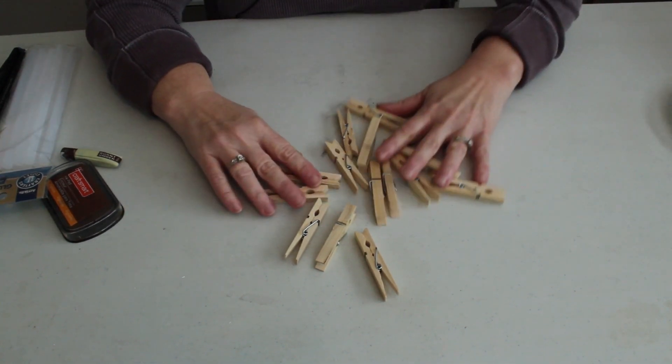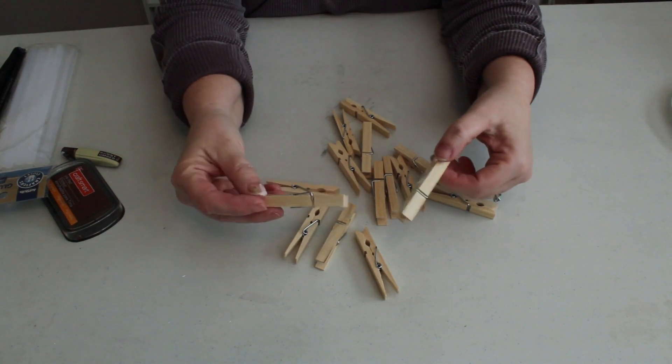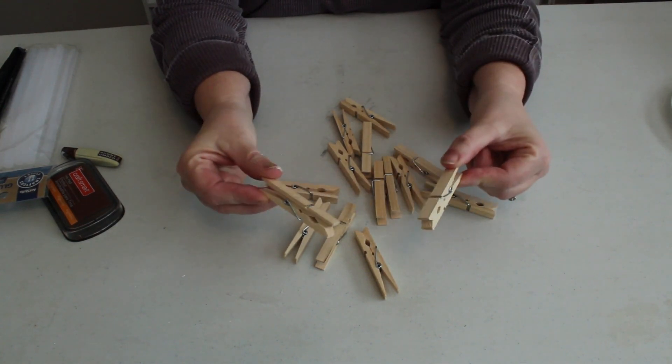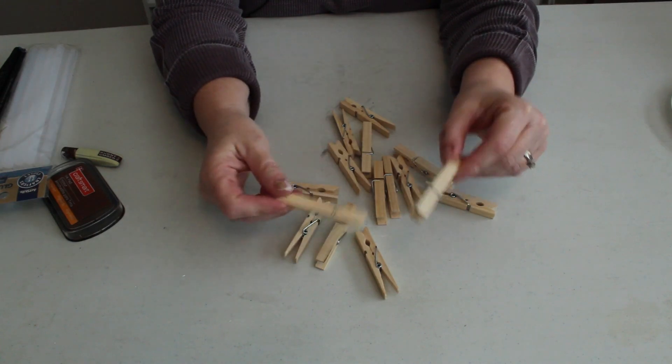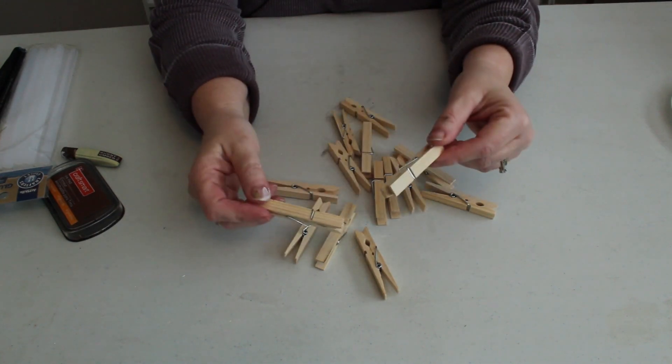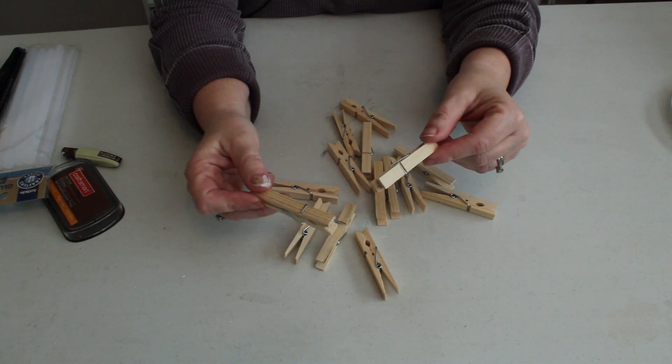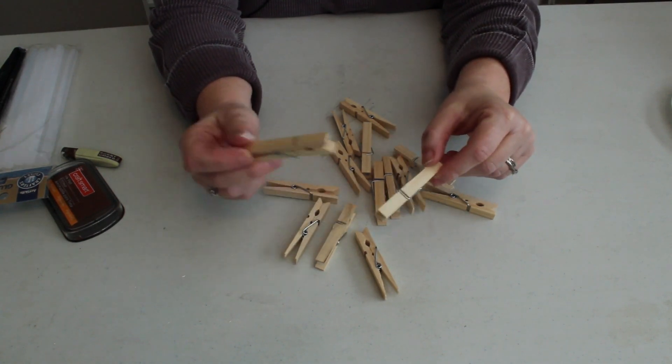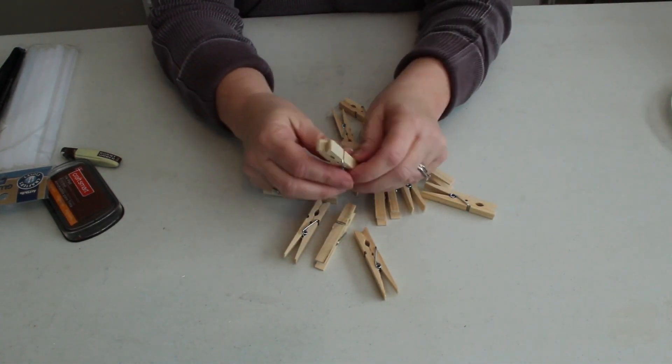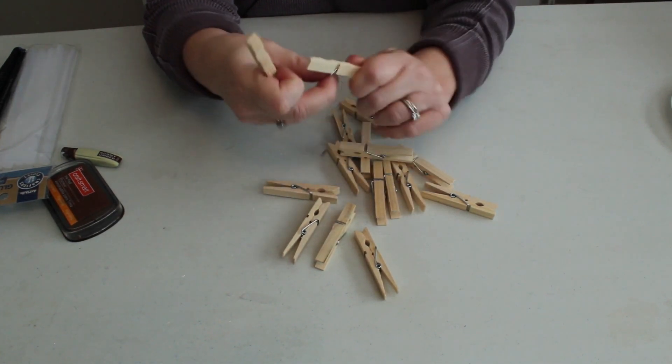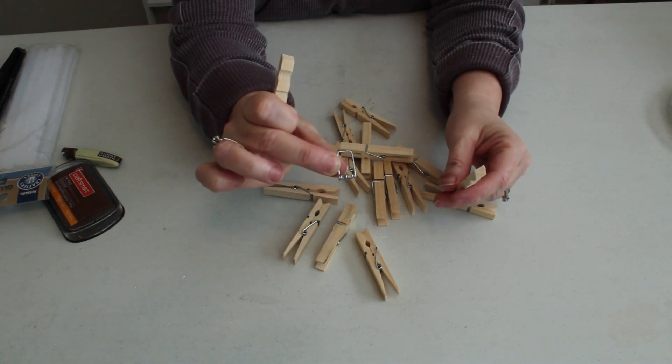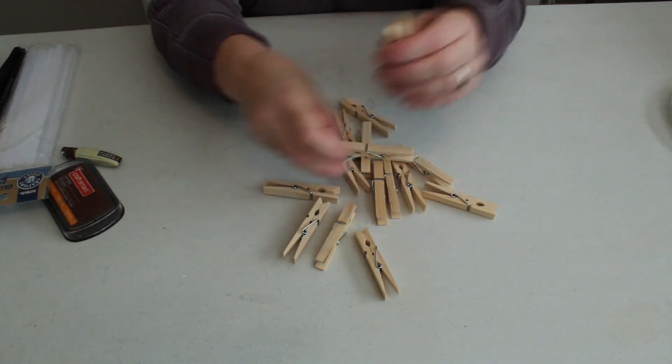So the first thing I did was I got 15 clothespins and these are just regular old clothespins. I think I got these at the Dollar General. I know they sell them at the Dollar Tree, at Walmart, all kinds of places. So they're not hard to find and you probably have some around your home. So the first thing I'm going to do is I'm going to separate them. You just twist them and take this little spring out. I want it out of each one.